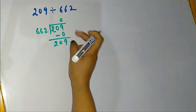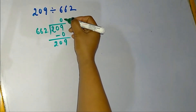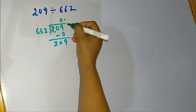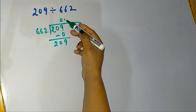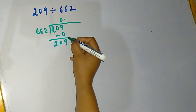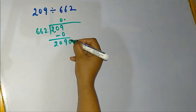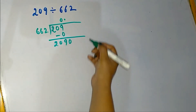To solve this question further, we need to put one decimal point here in the quotient. Due to this decimal point, we are allowed to put one zero after each step.